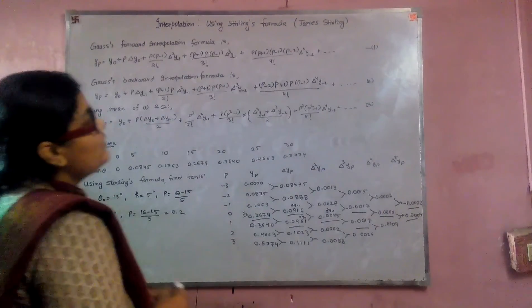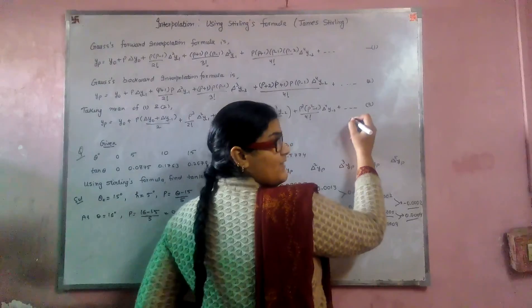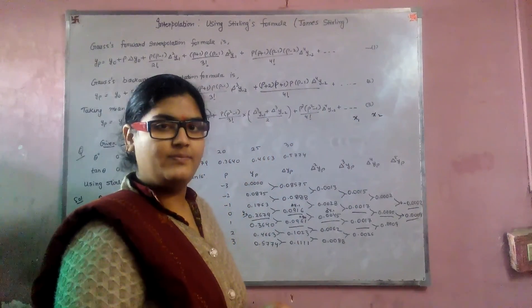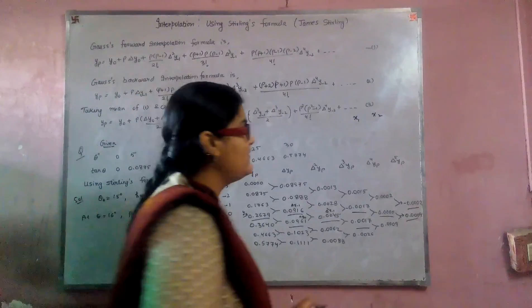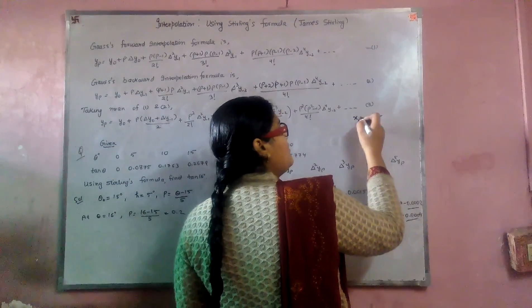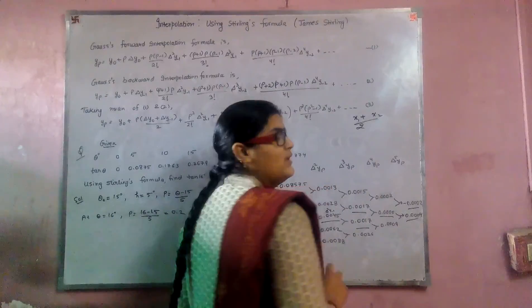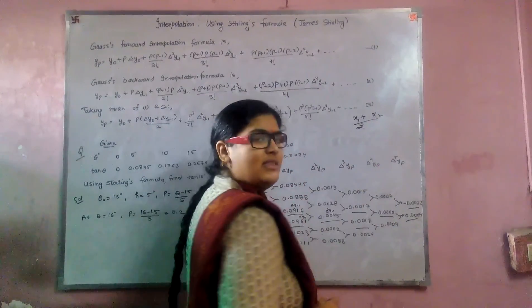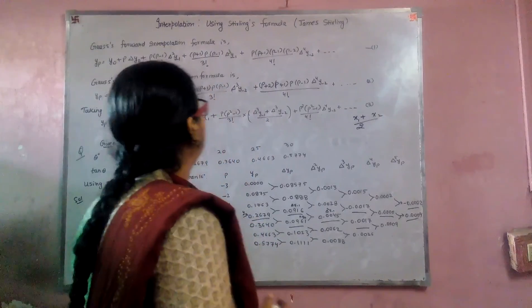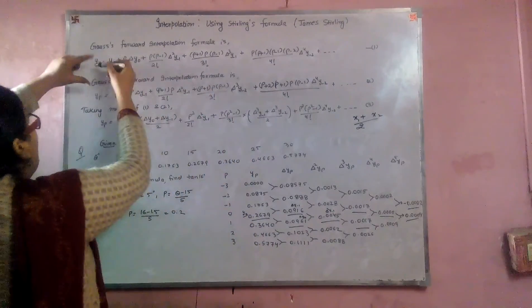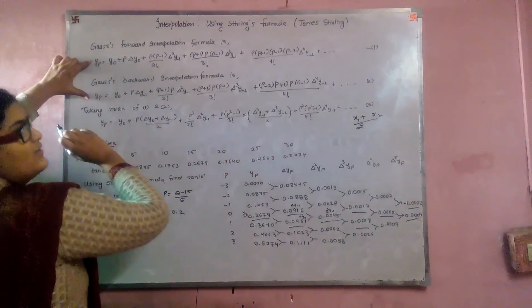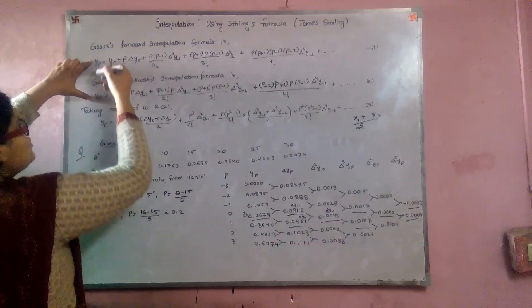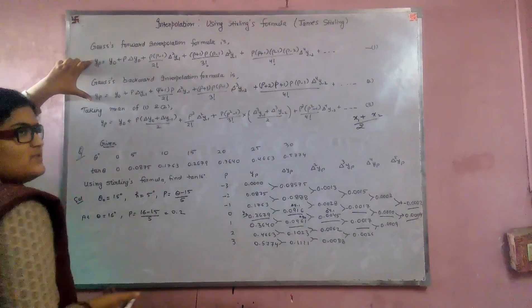To take the mean of any values: sum of observations divided by total number of observations. If we have two values and have to find the mean, we add them and divide by 2. So on the left side we take the mean: (yp + yp)/2 = 2yp/2, which becomes yp.